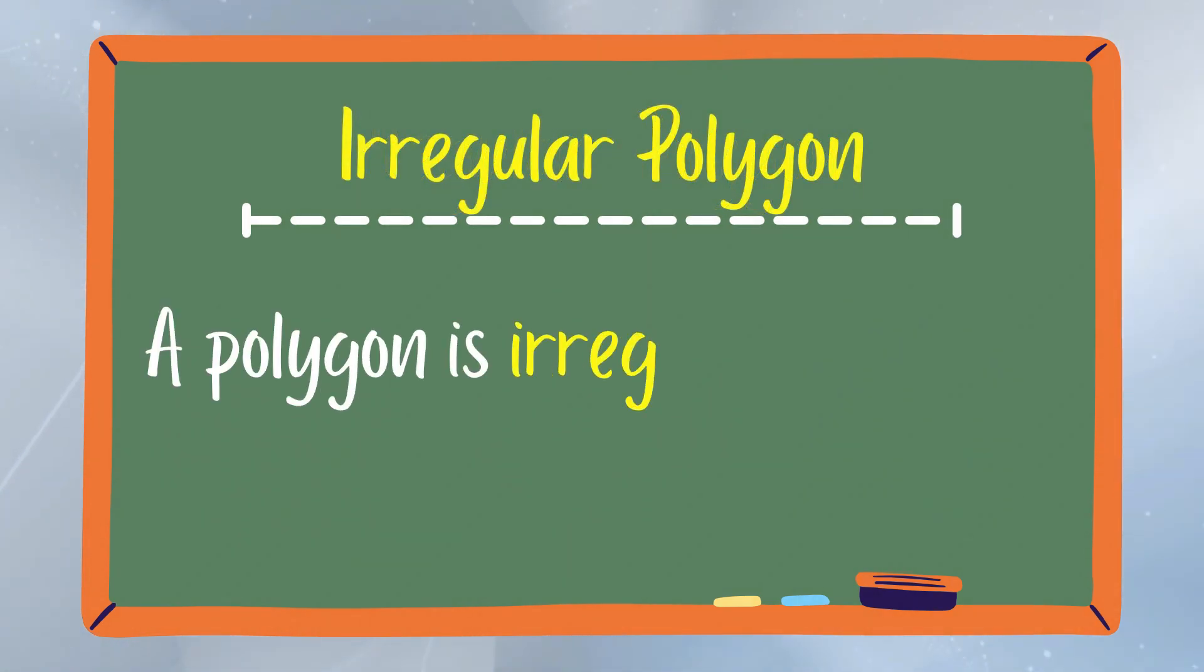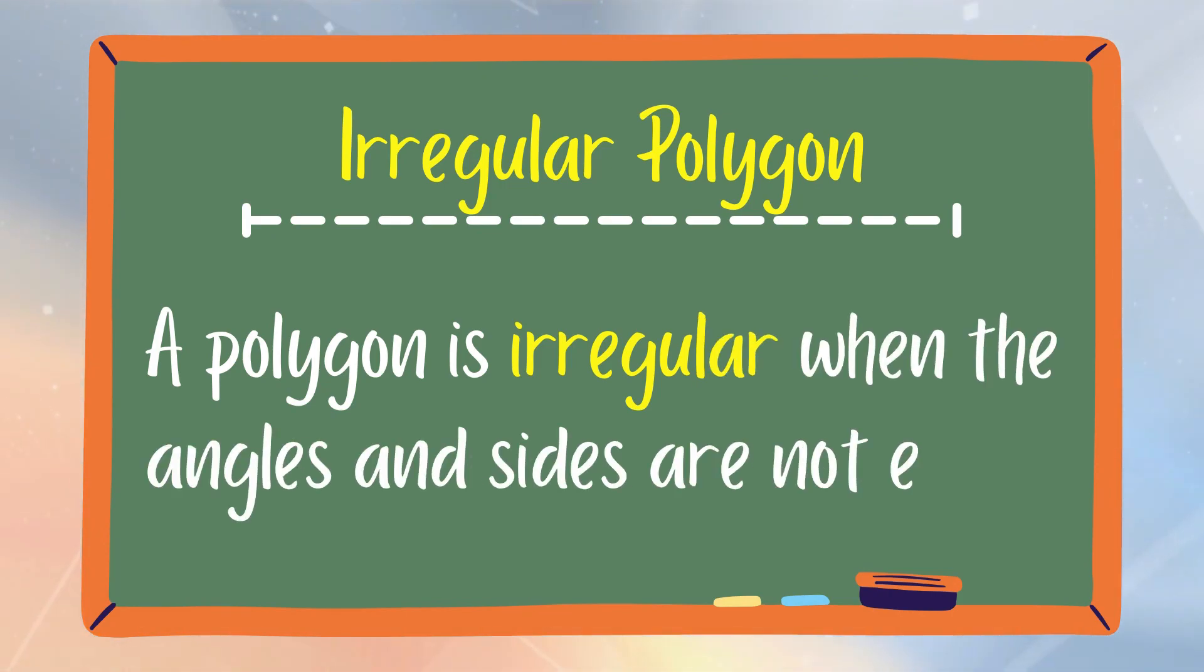On the other hand, a polygon is irregular when the angles and the sides are not equal. We can say that an irregular polygon has different measures of angles and side lengths.